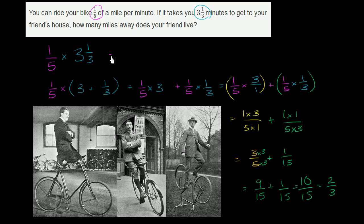So this is the same thing as 1 fifth times. And I'm just going to write 3 and 1 third as a mixed number. So it's 1 fifth times. 3 and 1 third can be rewritten as 9 thirds. Sorry, I'm going to rewrite 3 and 1 third as an improper fraction. So this is the same thing as 9 thirds, that's 3, plus 1 third,